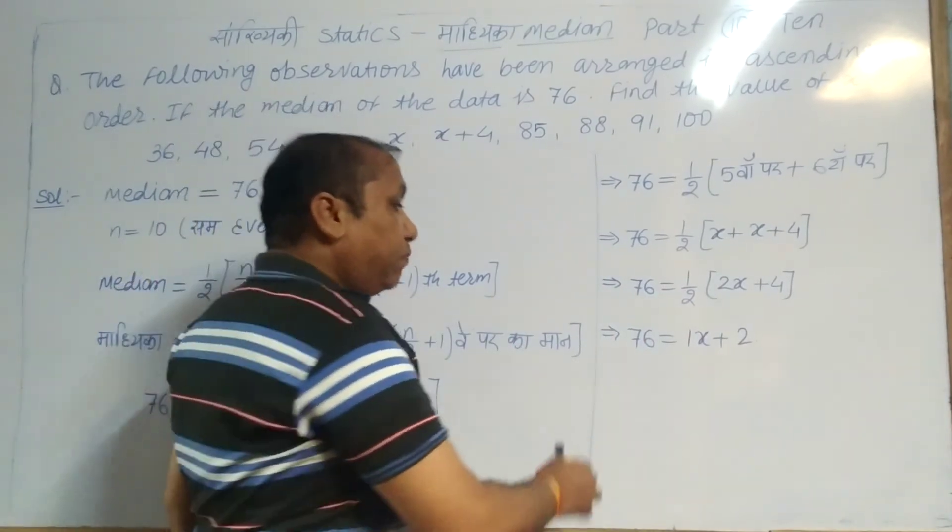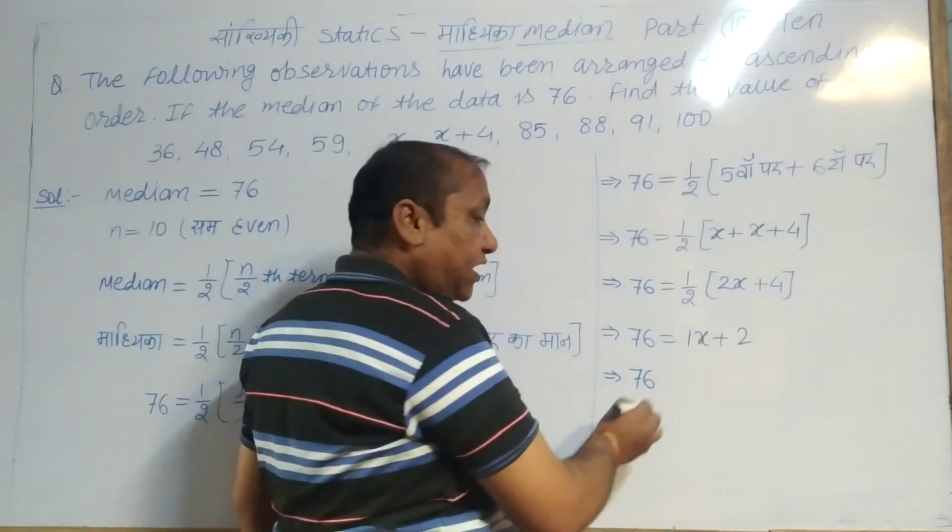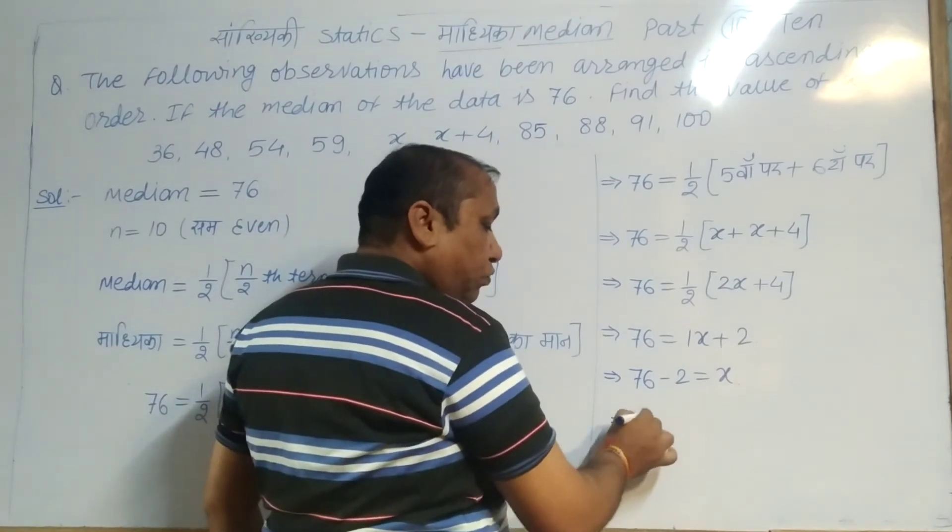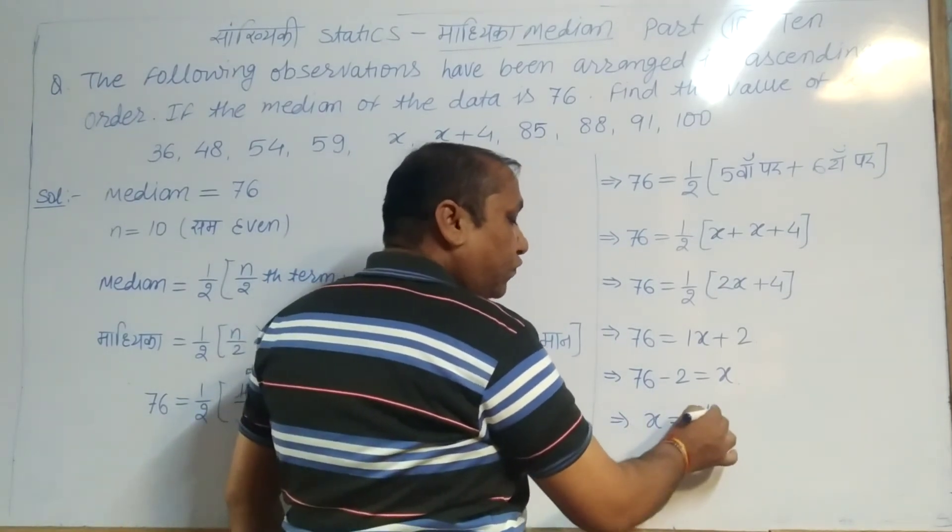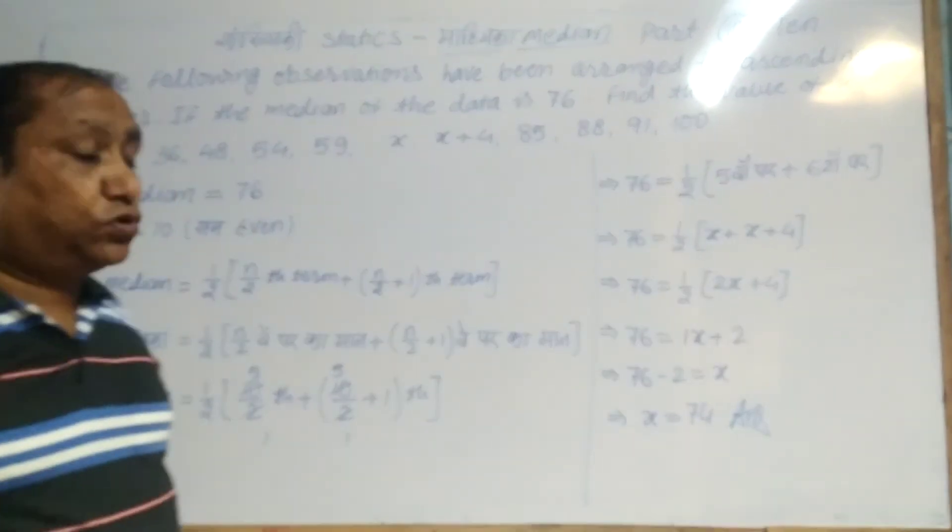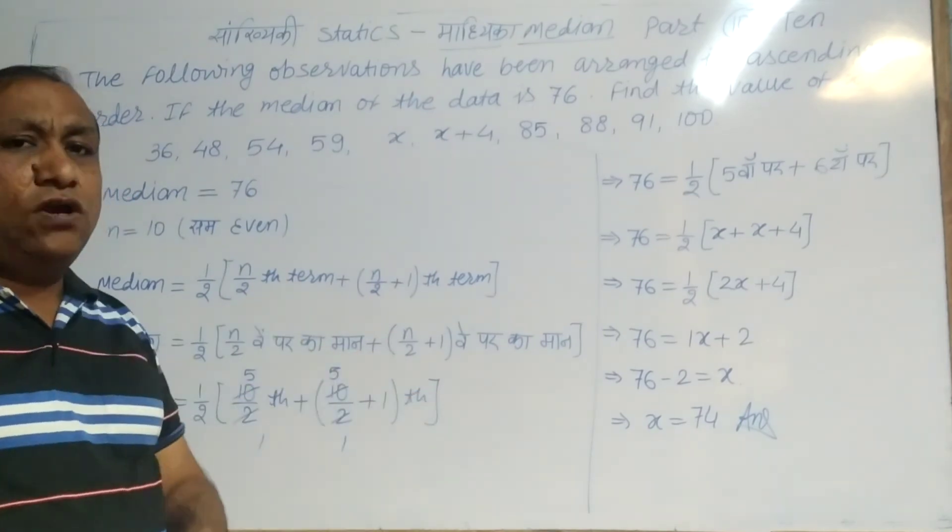76 equals x plus 2, so 76 minus 2 equals x. Therefore x equals 74. The value of x in this question is 74.